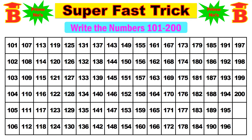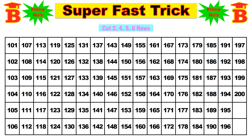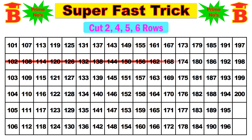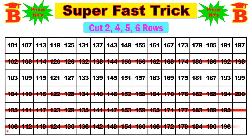Now we have a table with 6 rows and the numbers from 101 to 200. We have to cut the 2nd, 4th, 5th, and 6th rows. Strike out the 2nd row, then strike out the 4th row, then the 5th row, and then the 6th row as well.